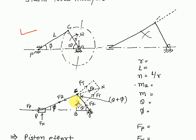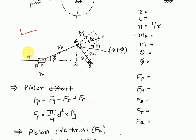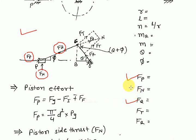In the second figure, fp is the piston force, fq is the force along the connecting rod, fn is the normal force at the piston (piston side thrust), ft is the tangential force perpendicular to the crank, and fr is the radial force along the crank.